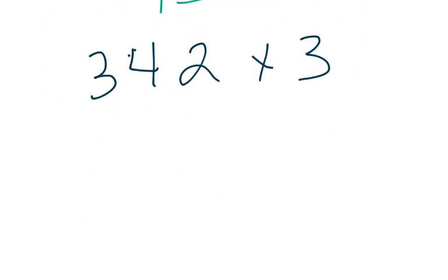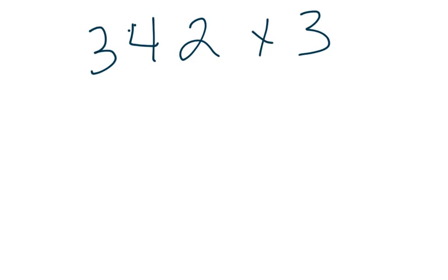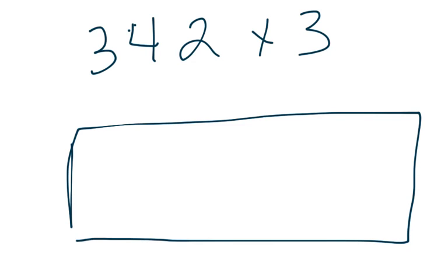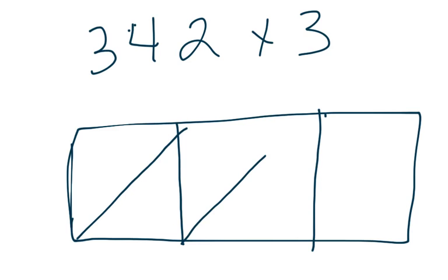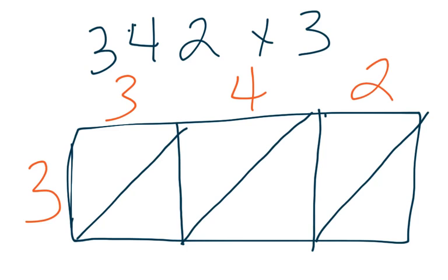Let's look at one more. 342 times 3. 3-digit number, 1 on the side, so we're going to build a 3-wide box. 3 on the side, 3, 4, 2. Multiplication symbol.